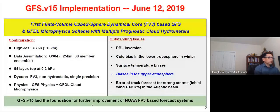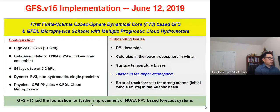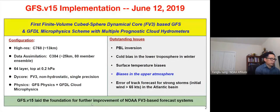As you all know, we had GFS version 15 in operation last year in 2019. That was the first finite volume cubic sphere dynamical core-based GFS. We also upgraded the microphysics scheme — we had been using the Zhao-Carr, a very simple microphysics scheme, and switched to the GFDL microphysics scheme with cloud hydrometeors.